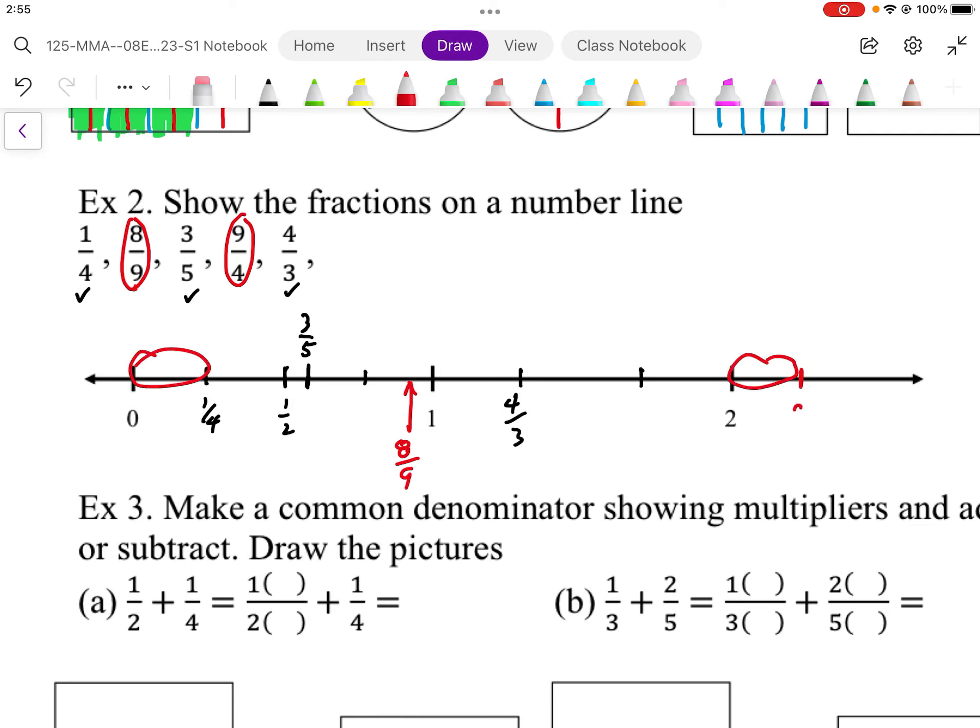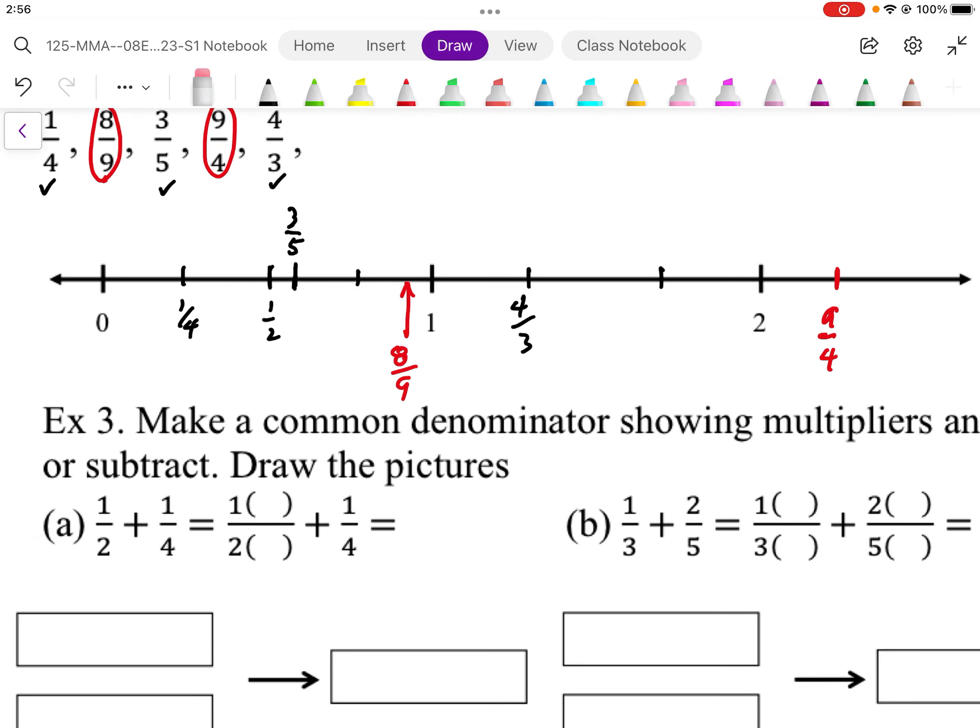So this is going to be my 9 divided by 4. So those are those parts on the number line. Again, we're just estimating. We just want to know generally where they are on the number line.